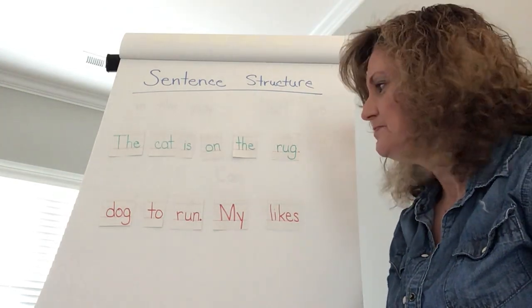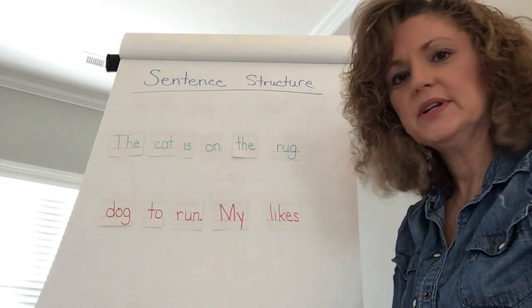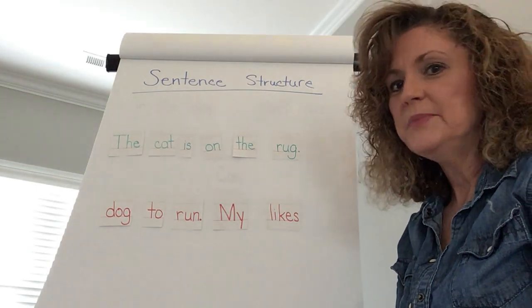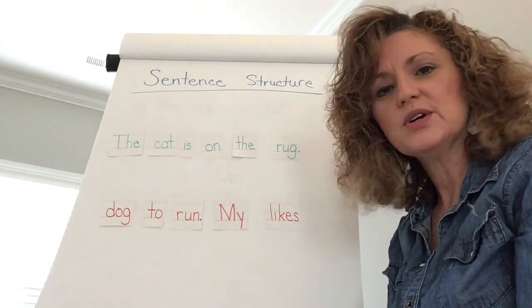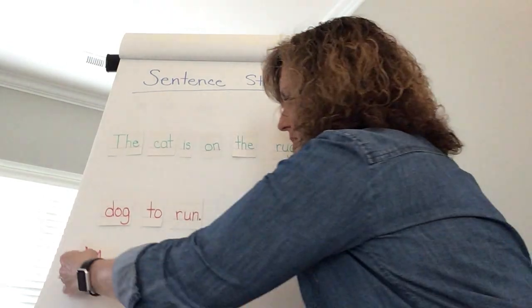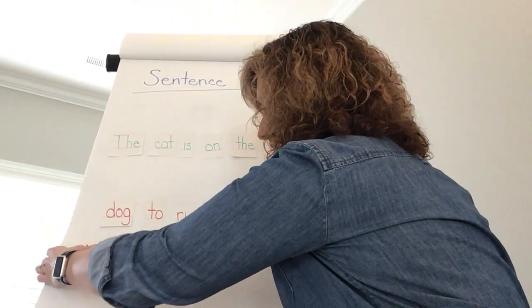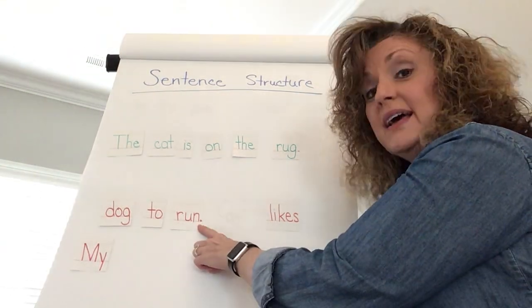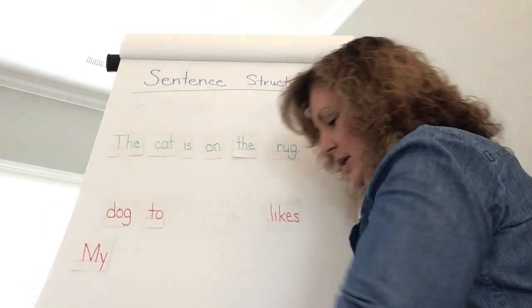Let's move on to another one. So let's read it as it's written now. Dog to run my likes. Well let's look through our words. Which one starts with a capital letter? The word my. So we're talking about my something I have. Then when I look at the rest of my words I see that the word run has a period after it. So I know that's going to be the last word of my sentence.